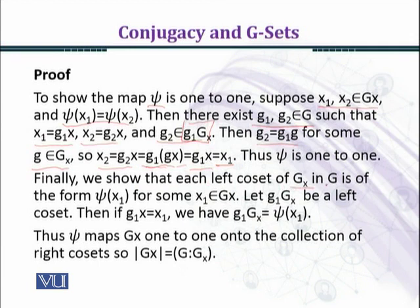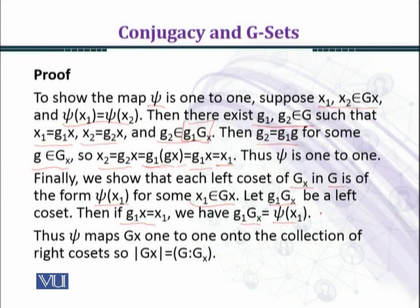Finally we show that each left coset of G_x in G is of the form psi(x₁) for some x₁ belonging to the orbit G_x. Let g₁·G_x be a left coset. Then if g₁·x = x₁, we have g₁·G_x = psi(x₁). So psi maps elements of the orbit G_x onto the left cosets. Here x₁ belongs to G_x orbit, and under psi the image is g₁·G_x, where G_x is our stabilizer.